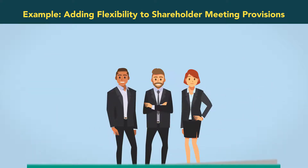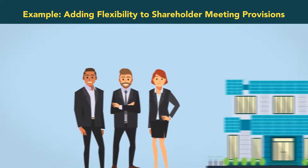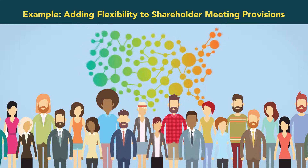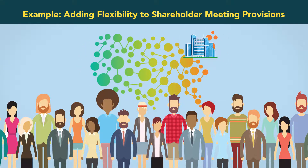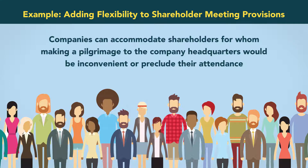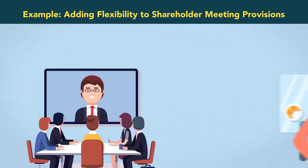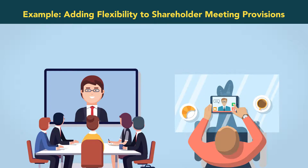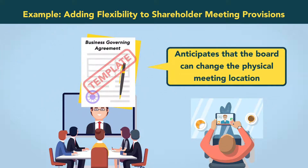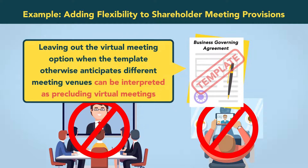For a small business, such as a corporation with few or even a single shareholder, holding a shareholder meeting at the corporation's office poses little problem. But what if the corporation is larger, with shareholders who reside in locations distant from the corporate headquarters? An increasingly popular option is to use online meeting services, including video conferences or teleconferences. Wyoming law permits such remote meetings. However, though the generic template provision anticipates that the board can change the physical meeting location, it does not anticipate virtual meetings. Leaving out the virtual meeting option, when the template otherwise anticipates different meeting venues, can be interpreted as precluding virtual meetings.